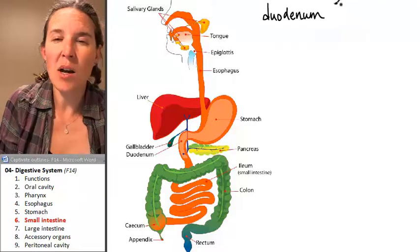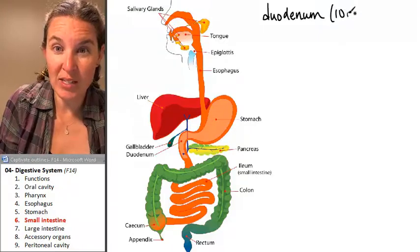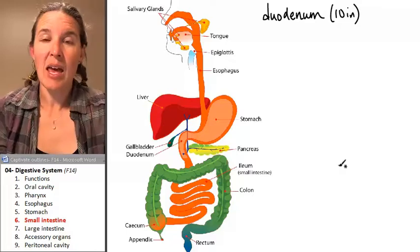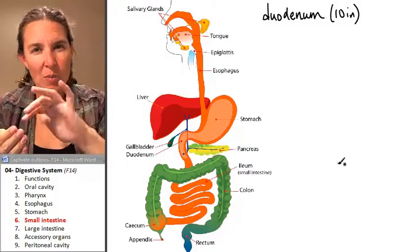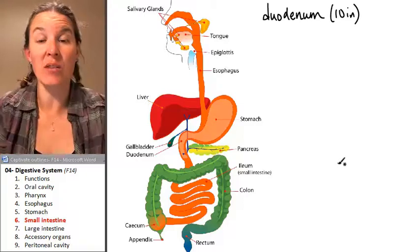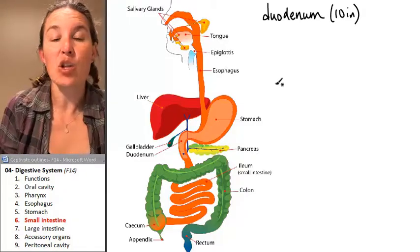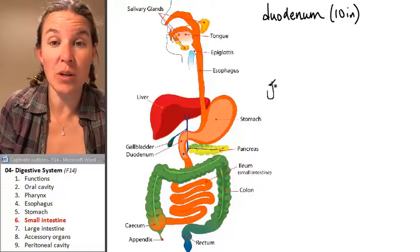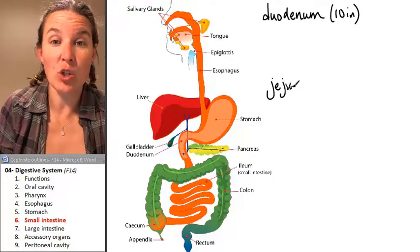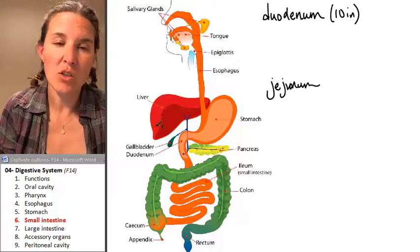The duodenum is pretty short. It's about ten inches long, and it forms kind of a C shape directly out of the stomach. The duodenum feeds directly into the next piece, which is called the jejunum.